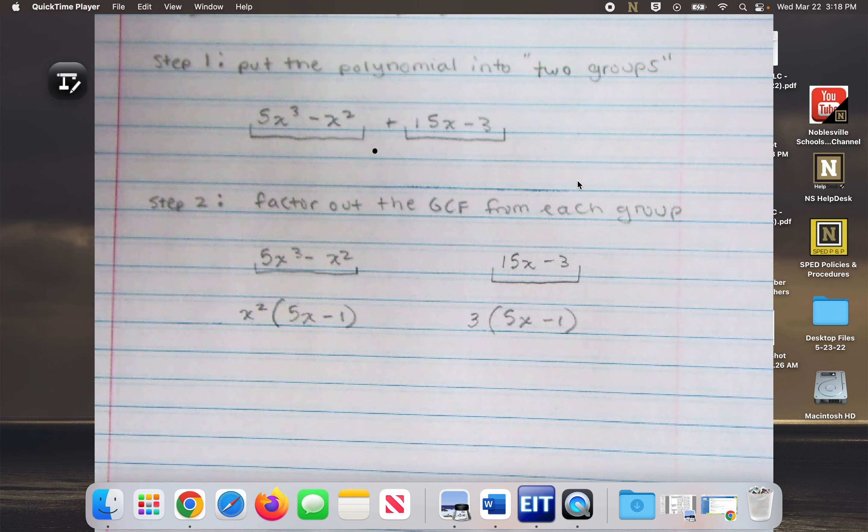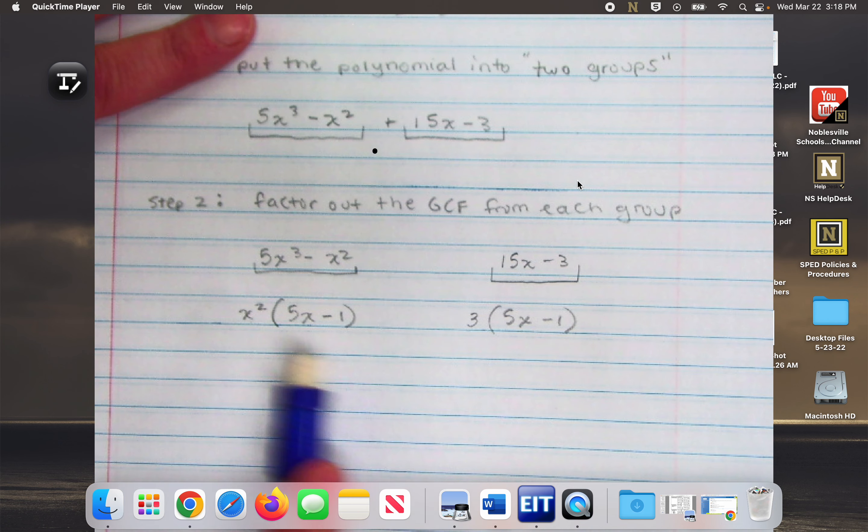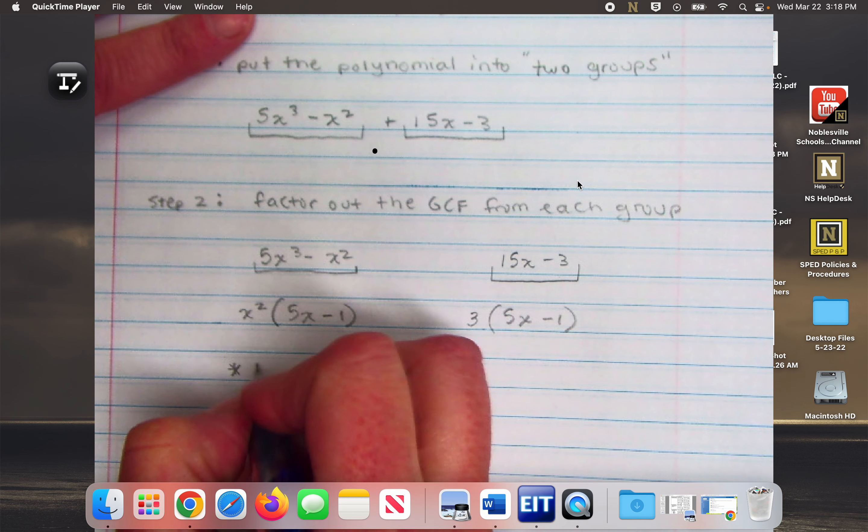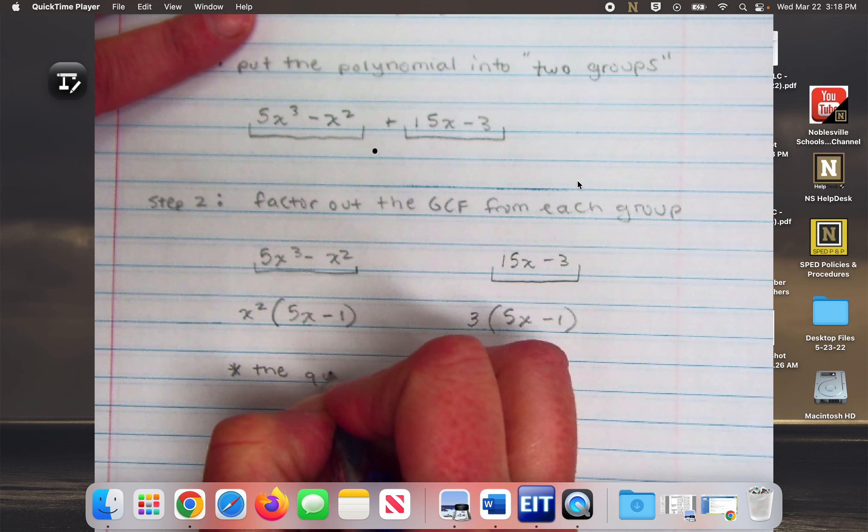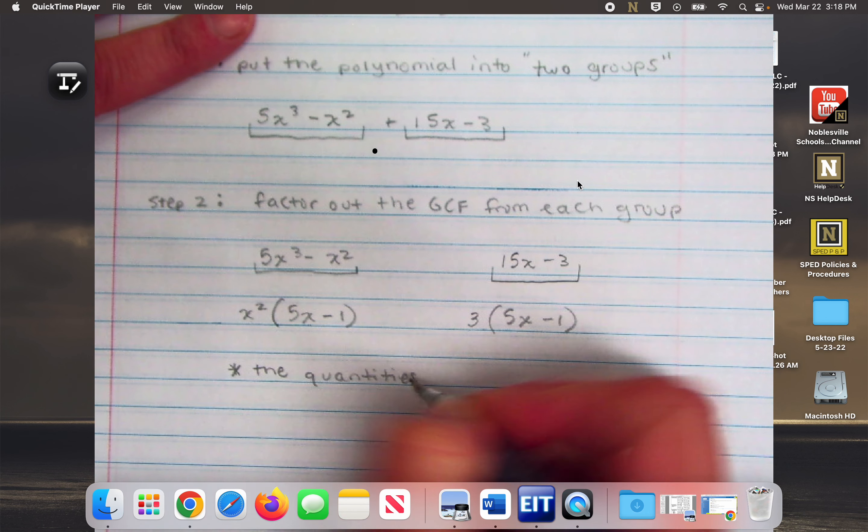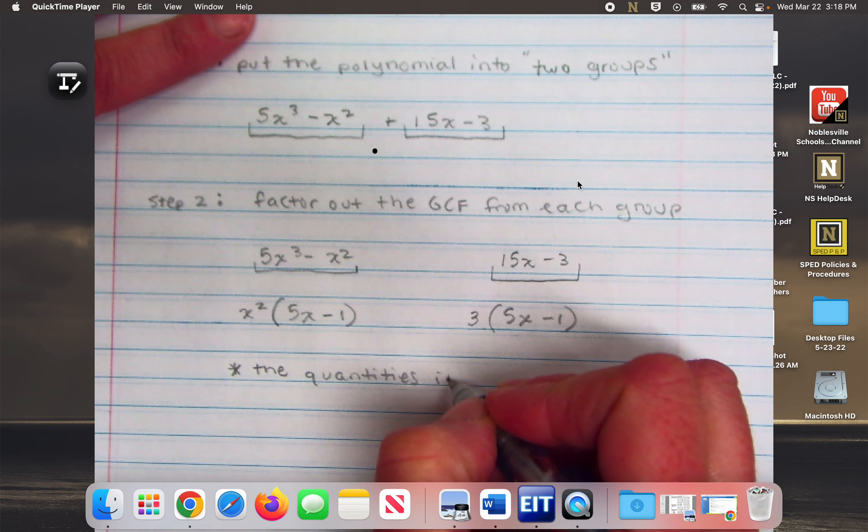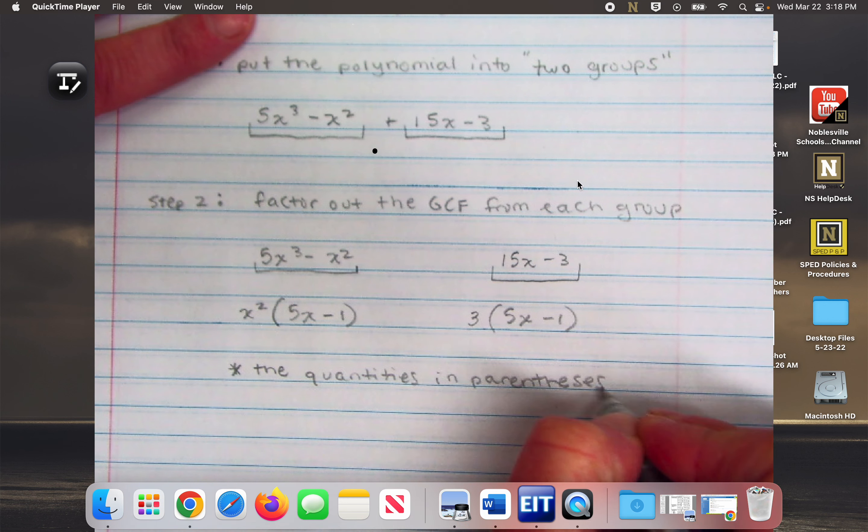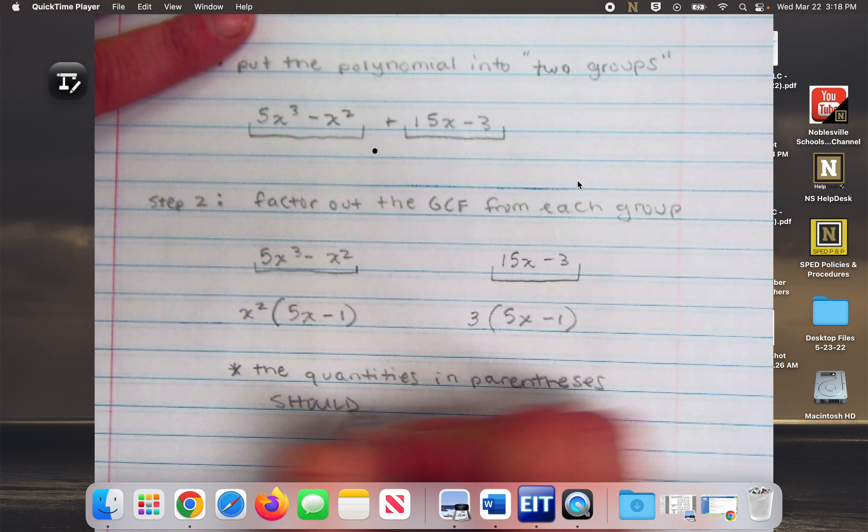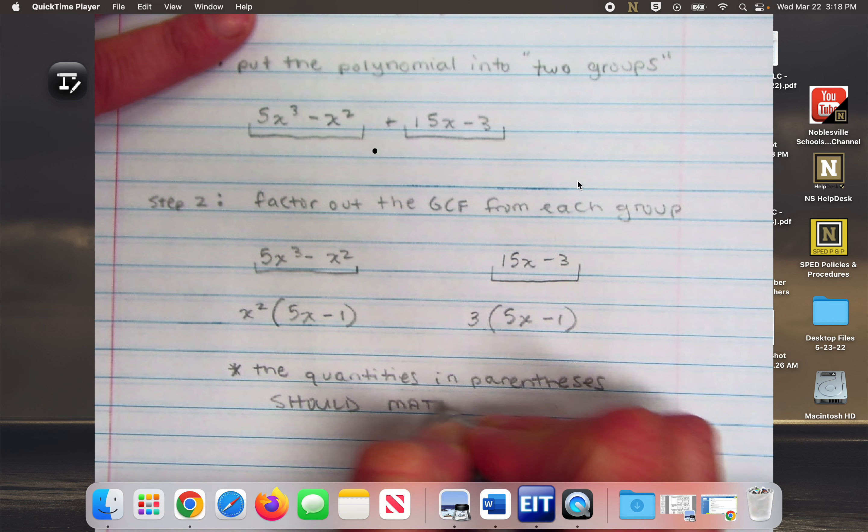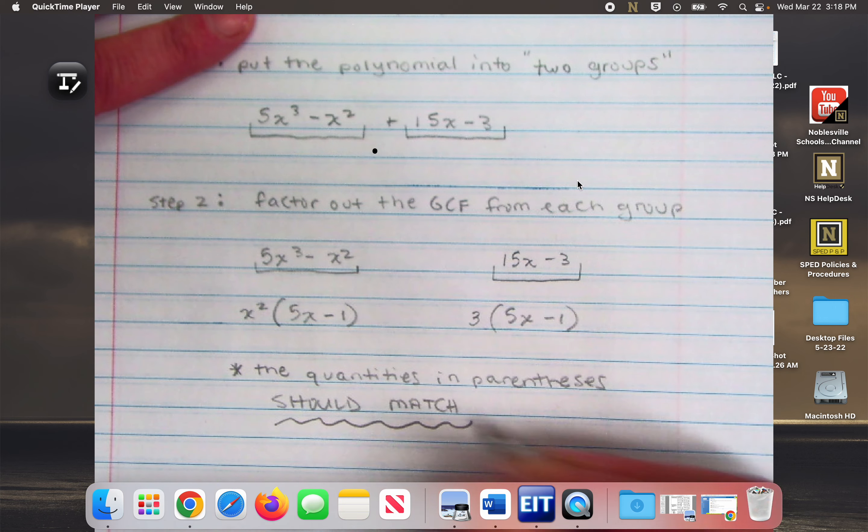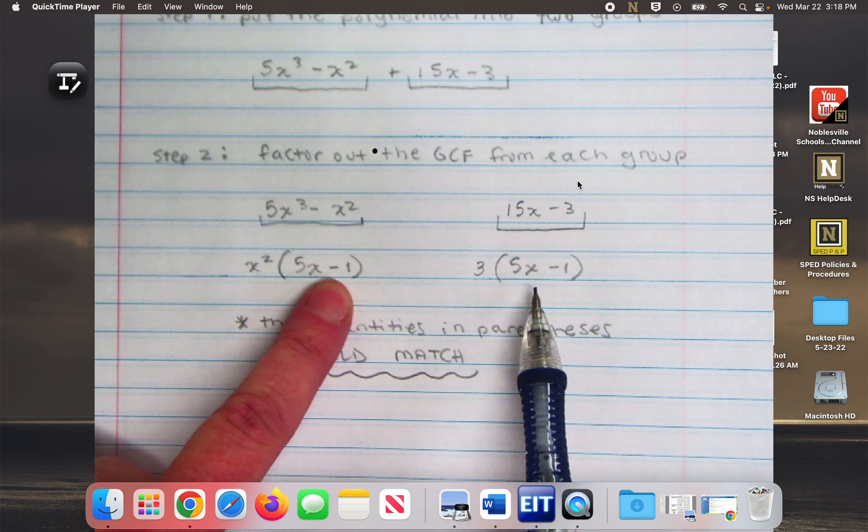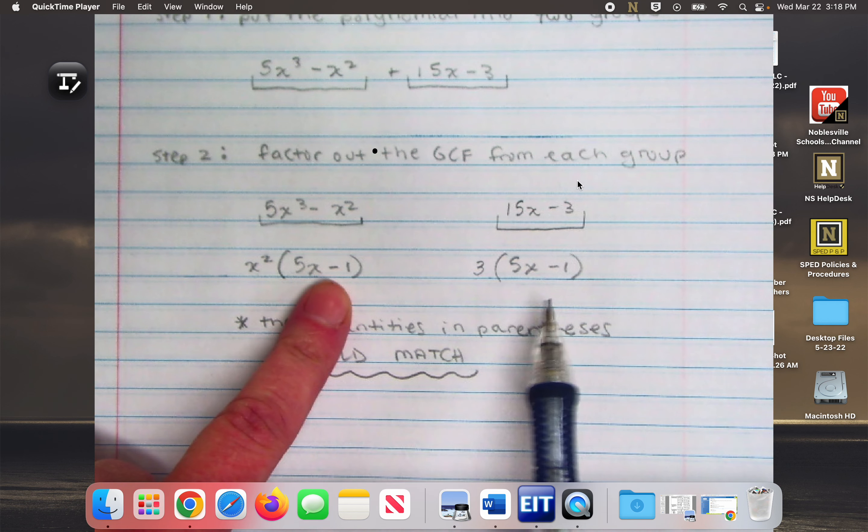So right away you should notice something about these two things that I just grouped. What do you notice about the quantities? The quantities in parentheses should match. If they don't match then there's a problem. I have 5x minus one and I have 5x minus one, that's how I know I'm on the right track.